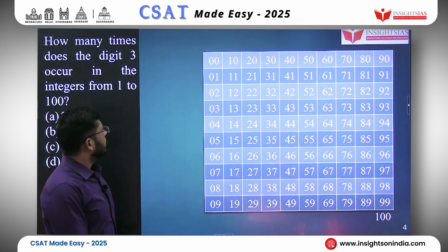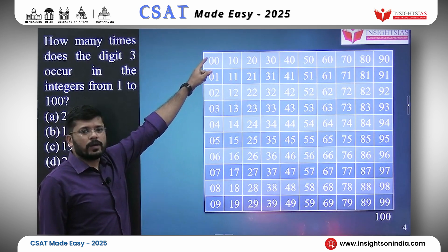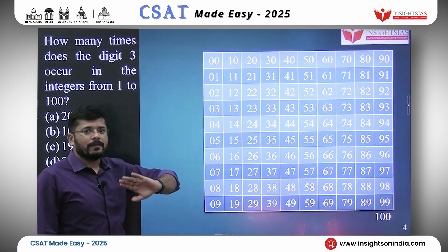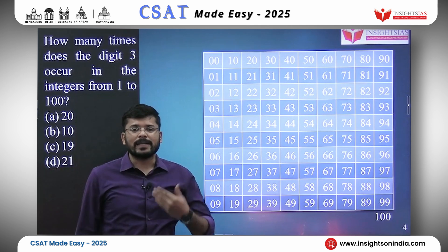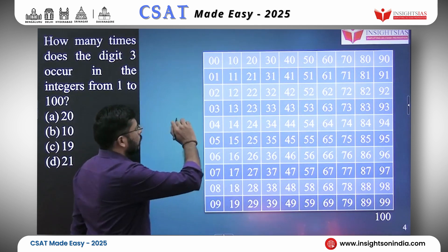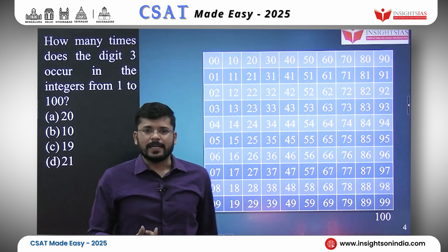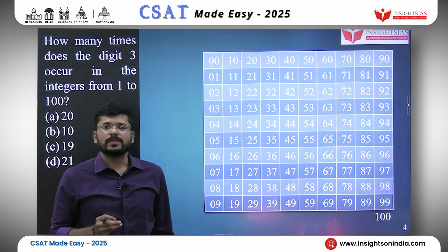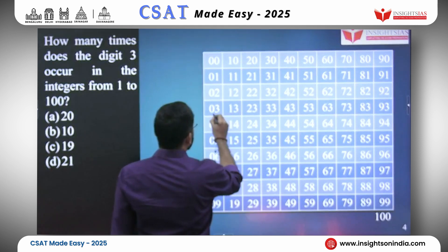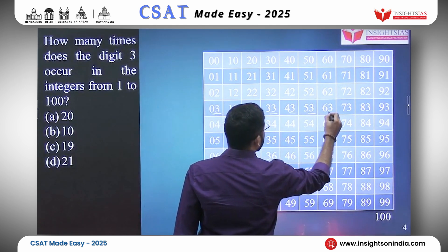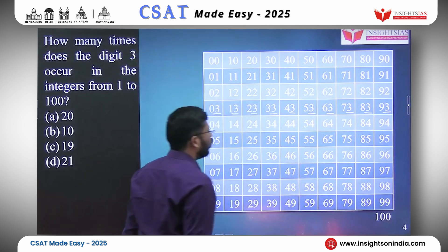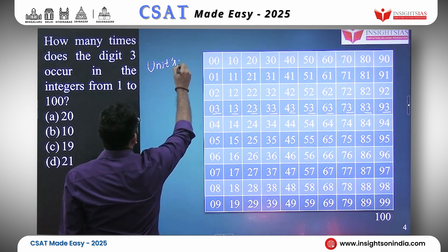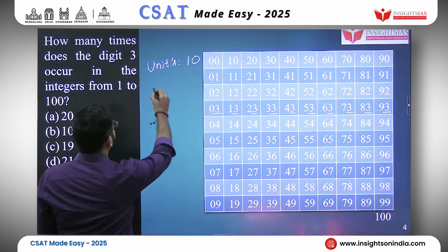The numbers are arranged not beginning with 1 in the usual way but laid out for easy imagination — 1 to 10, 11 to 20, 21 to 30, and so on. Let us count how many times the digit 3 occurs in the unit's place only. It occurs in: 3, 13, 23, 33, 43, 53, 63, 73, 83, and 93. That is 10 times in the unit's place.